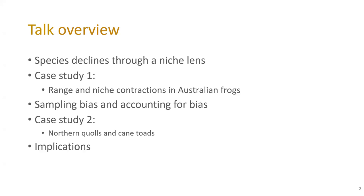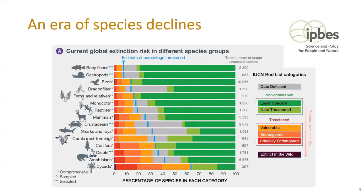I'll outline the rationale of why it's useful to examine species declines through a niche lens, then talk about work we just published on changes in range and niche dynamics for Australian frogs. Richard will then discuss common problems with sampling bias in biodiversity data from places like ALA and GBIF, and present a case study on the decline of the northern quoll and spread of cane toads. Finally, I'll cover the ecological and conservation implications.